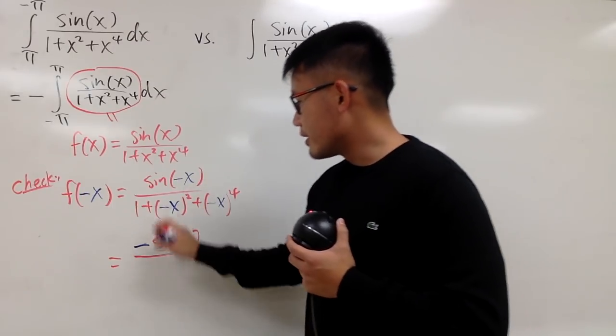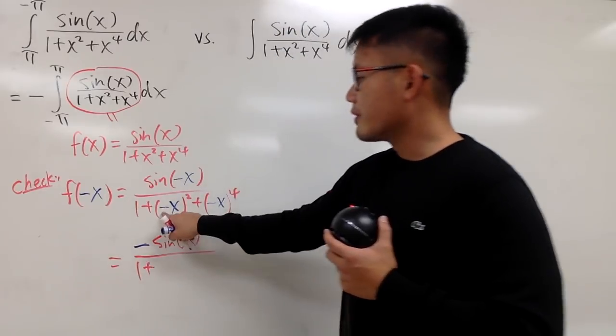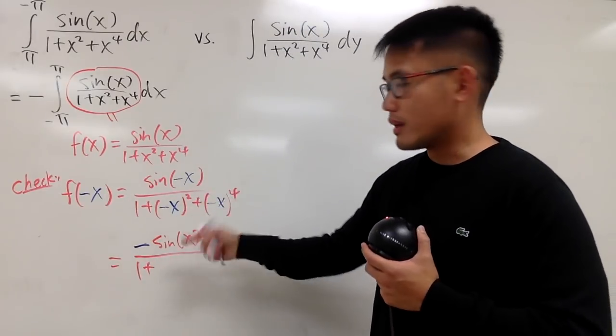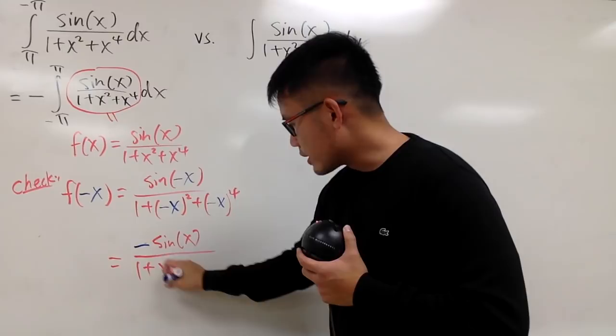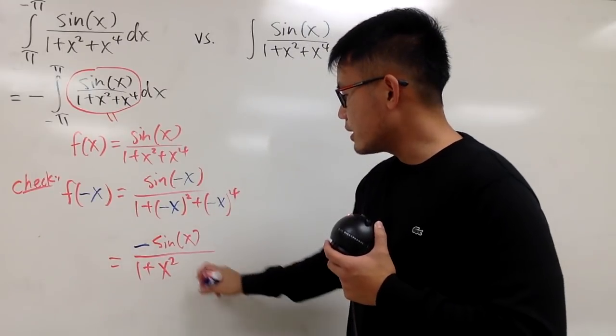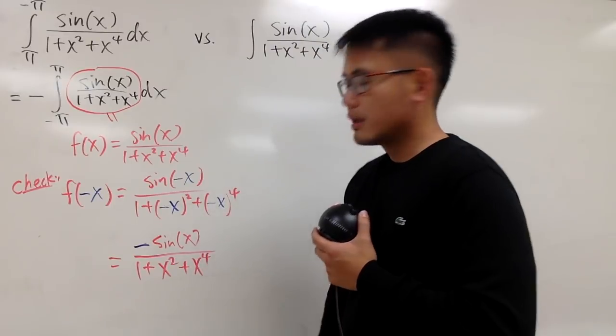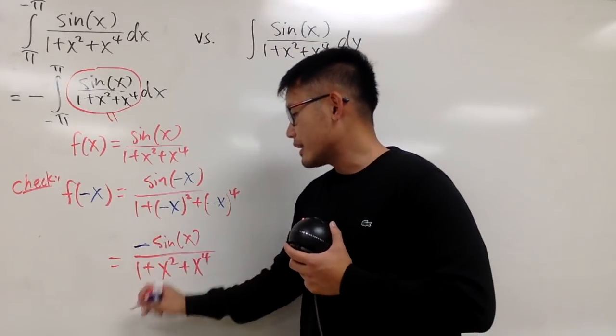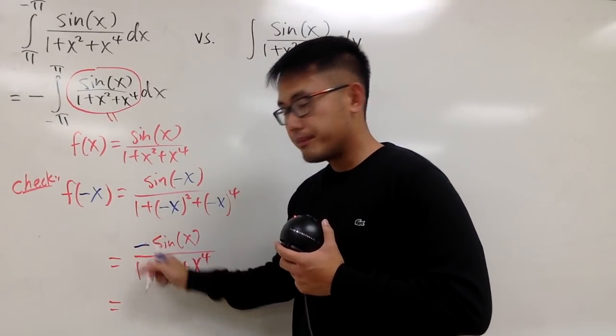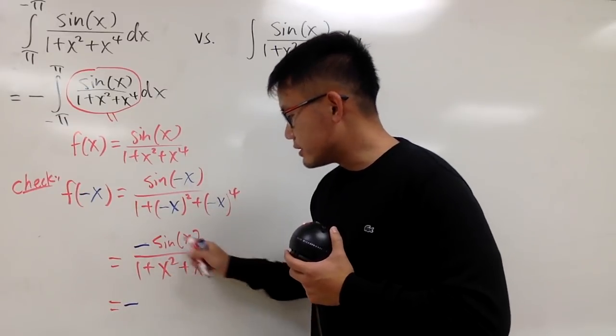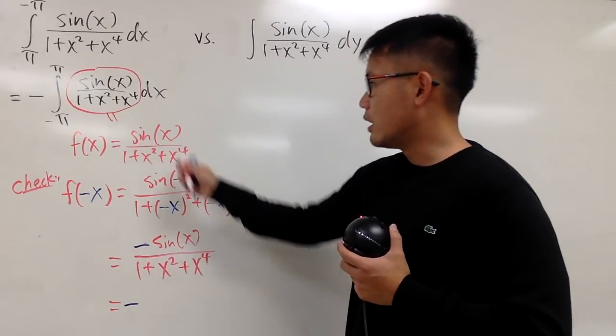And then on the denominator here, this is 1 plus negative 1 squared is just 1, and x squared is still of course x squared, right? So this is x squared, and then same thing, because it's even power. So in the end, you see that we can actually have a negative right here, and then the red part is still the original function.